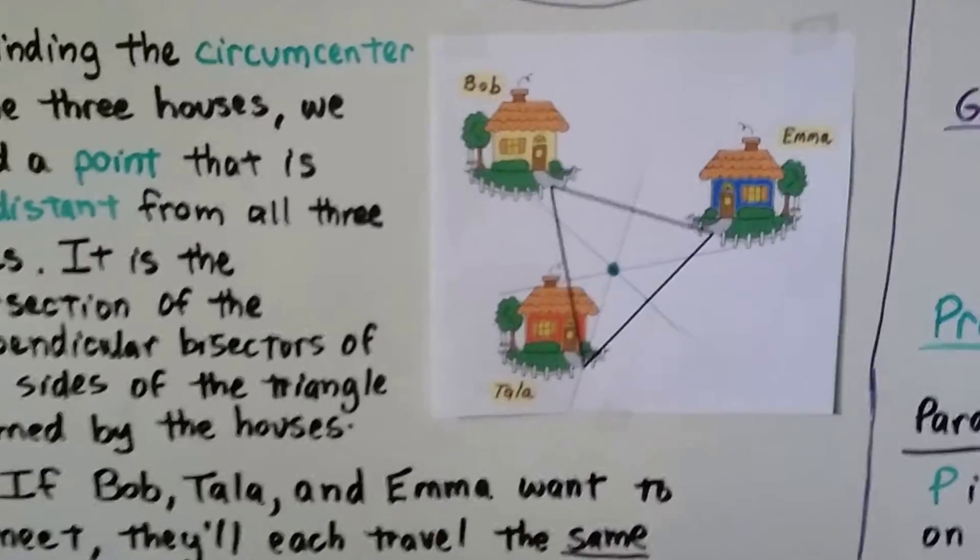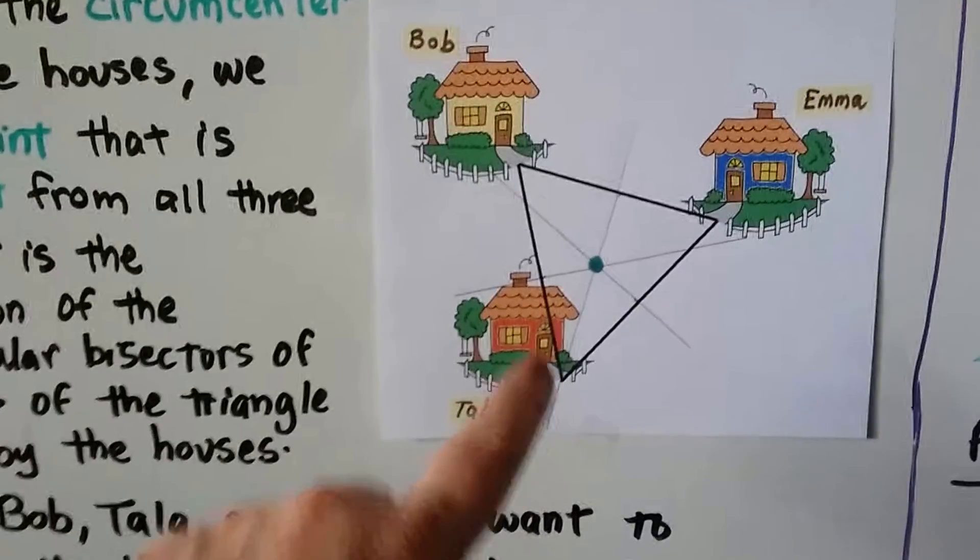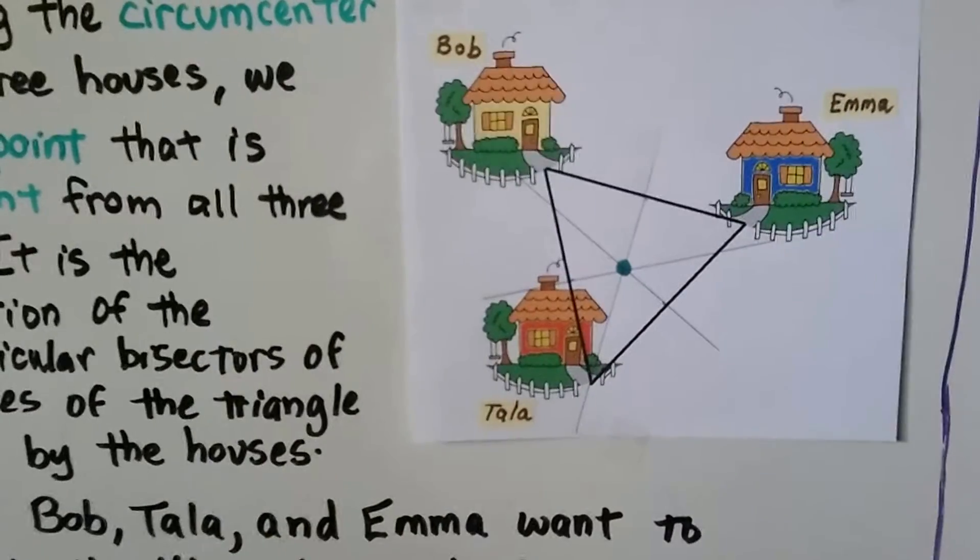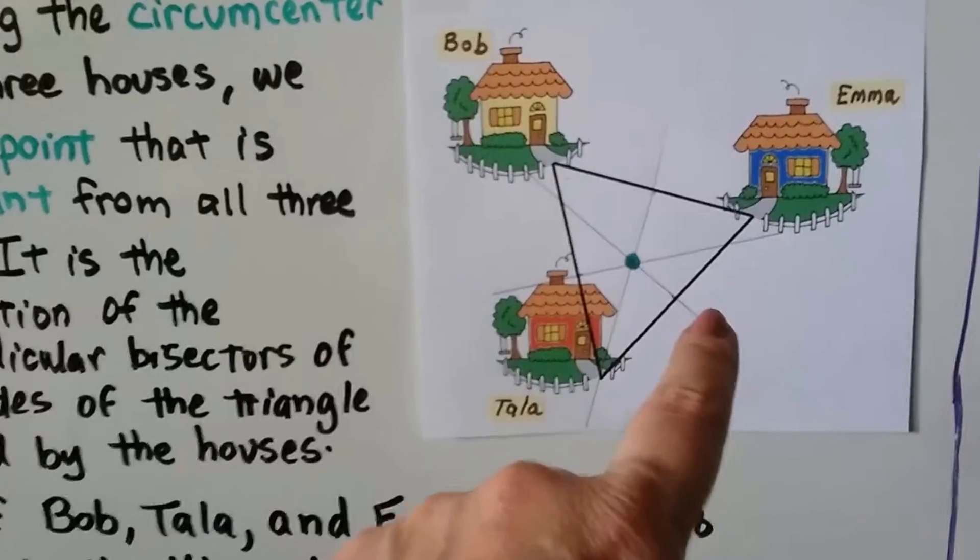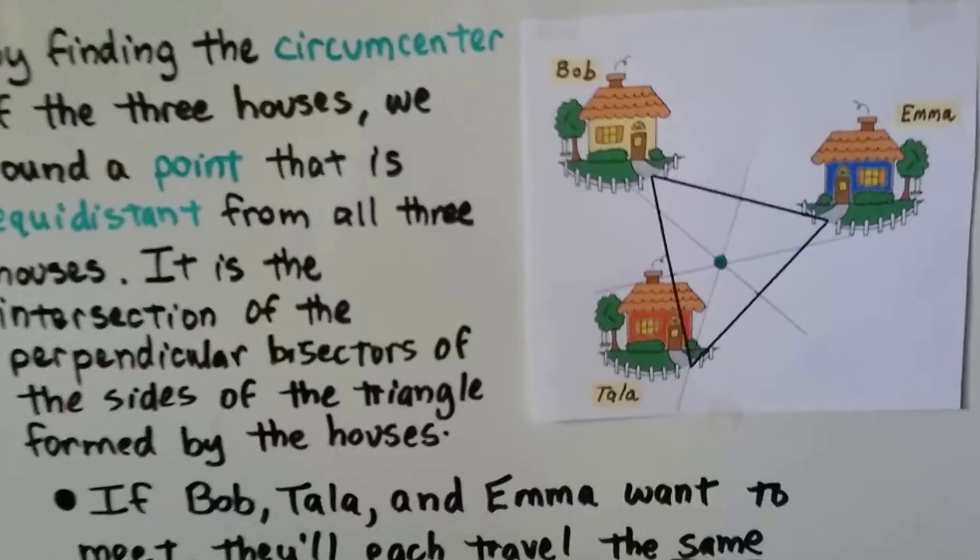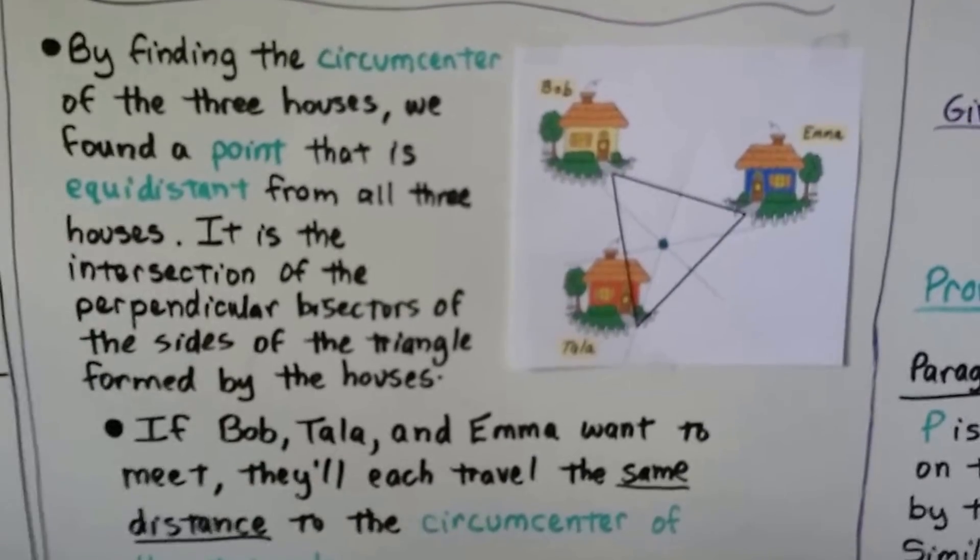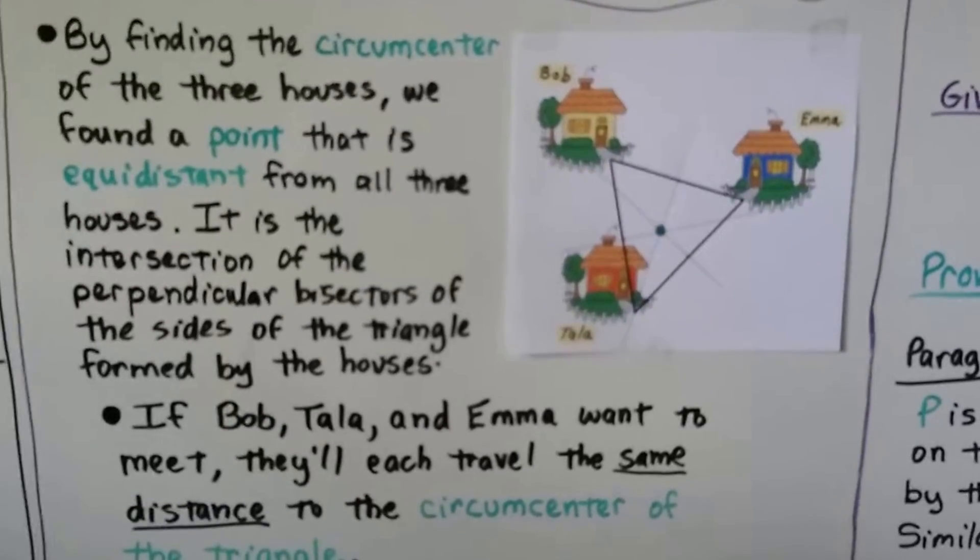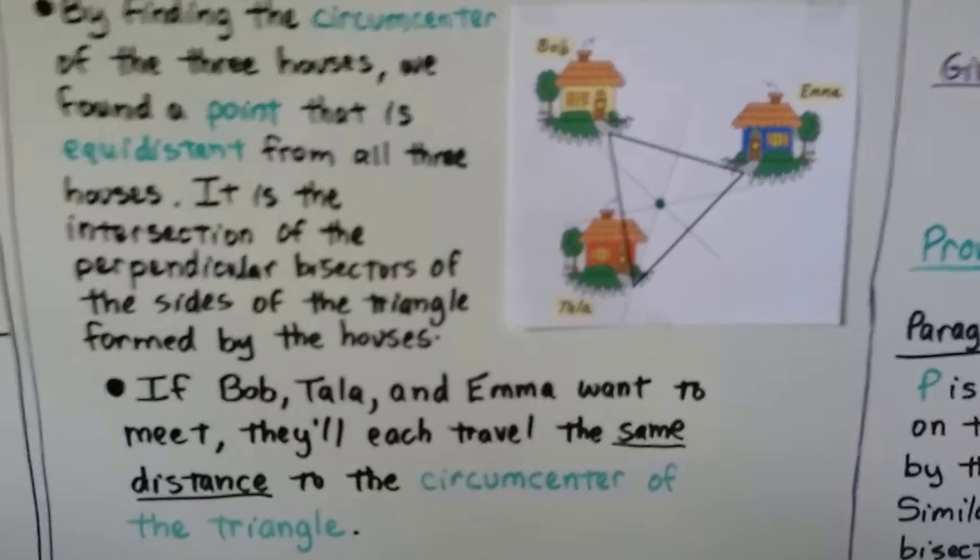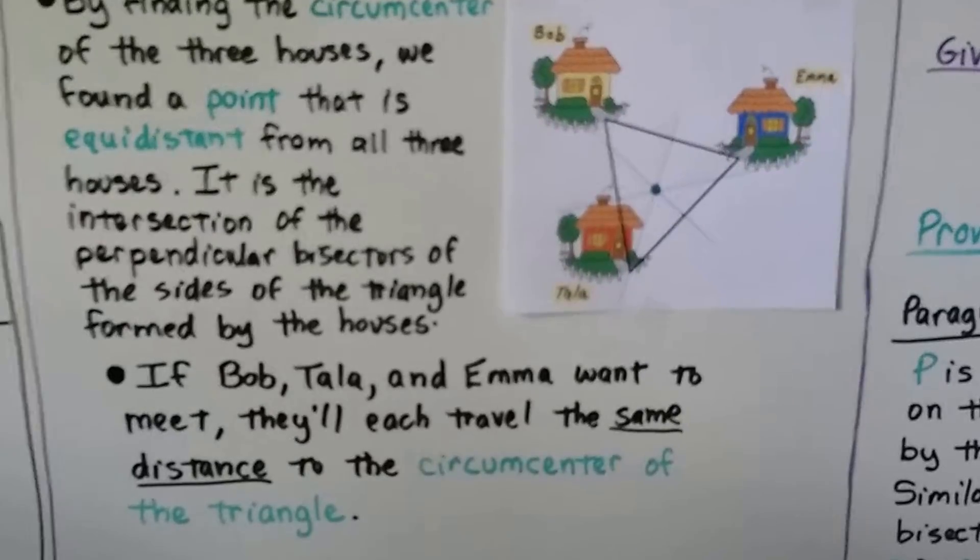Take a look at this drawing we have here. This is Bob's house, Emma's house, and Tala's house. Each of their walkways are connected with a vertex to make a triangle. And we draw bisectors for each side, and we find this point in the center. By finding the circumcenter of the three houses, we found a point that is equidistant from all three houses. It's the intersection of the perpendicular bisectors of the sides of the triangles formed by the houses. If Bob and Tala and Emma went to meet, they each traveled the exact same distance to the circumcenter of the triangle.